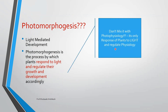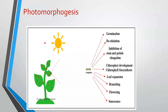I would like to mention that photomorphogenesis should not be mixed with photophysiology. In the previous chapter, we studied that plants give response to light, which comes under photophysiology — but that regulates only physiology. Here we are saying that because of light, developmental changes are visible, which is something deeper in context. Because of radiation from the sun, several changes are visible in a plant — that is photomorphogenesis.